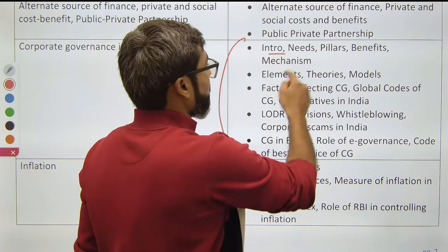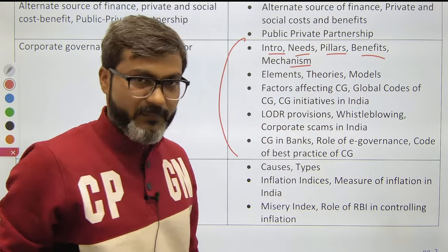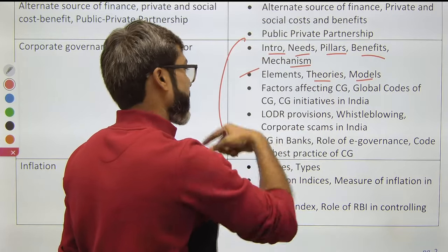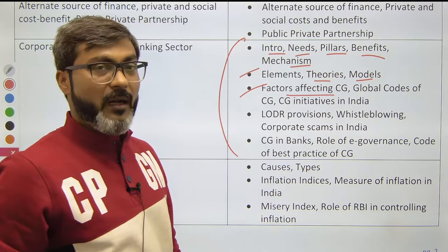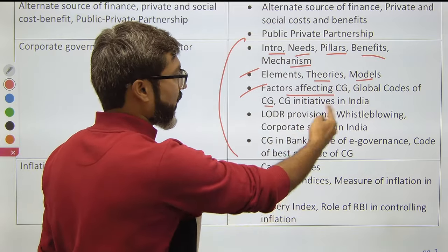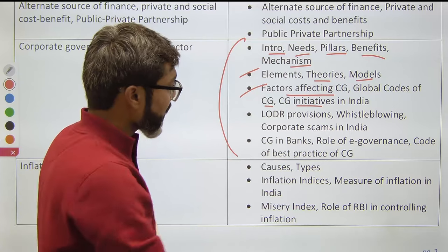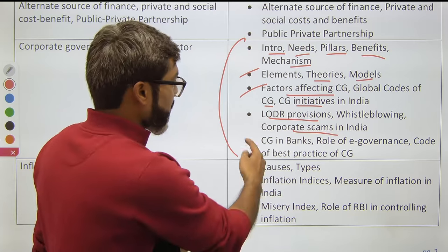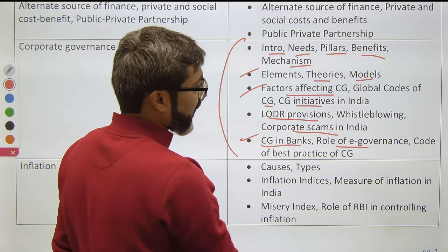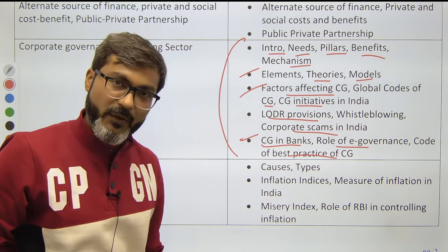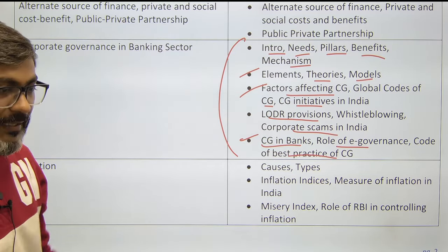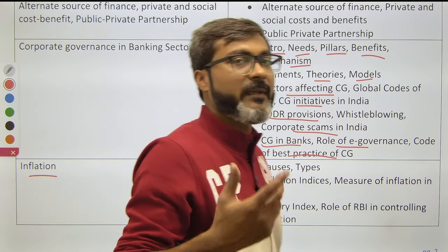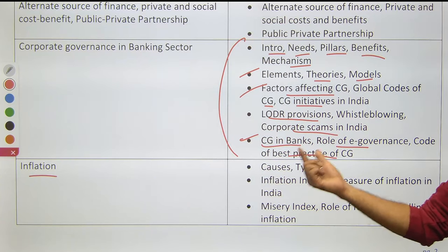A lot of questions were asked from Corporate Governance in the 2023 exam. Topics to cover: introduction, pillars, benefits, mechanisms, basic elements, theories and models, factors affecting corporate governance, global codes of corporate governance, corporate governance initiatives in India, LODR provisions, whistleblowing, corporate scams in India, corporate governance in banks, role of e-governance, and code of best practices.